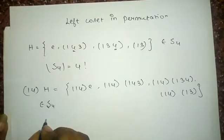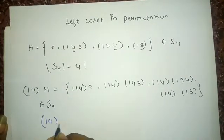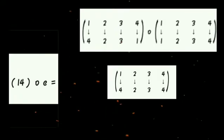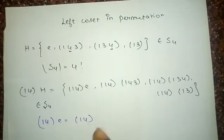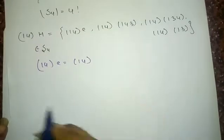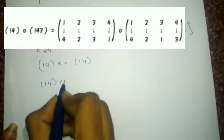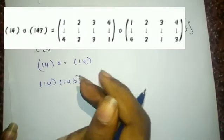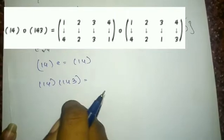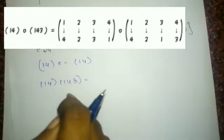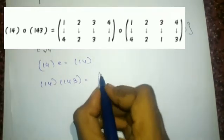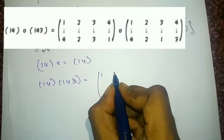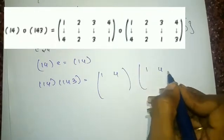First, let us compute (14) composed with E. Since E is the identity mapping, I will get the same (14). Now I will do the composition mapping for (14) and (143). I have already discussed how to do the composition operation for two permutations and provided the link in the description box. I will straight away write the answers for (14) and (143).